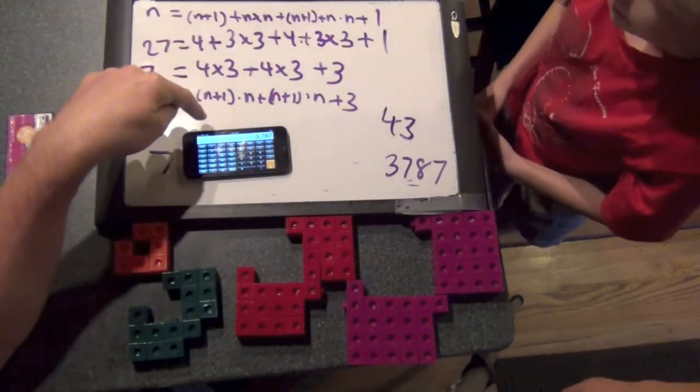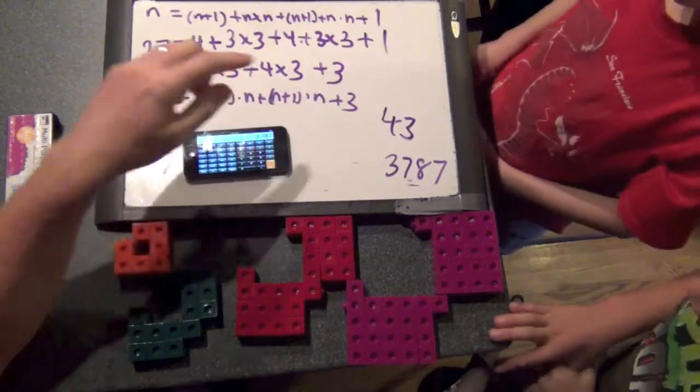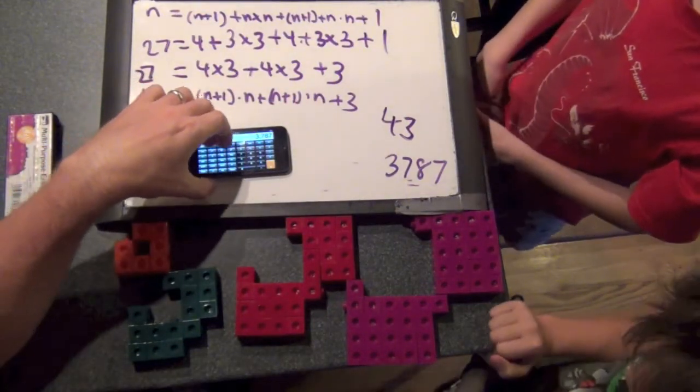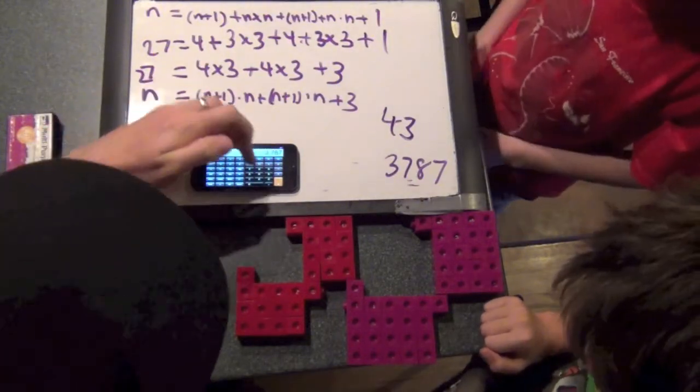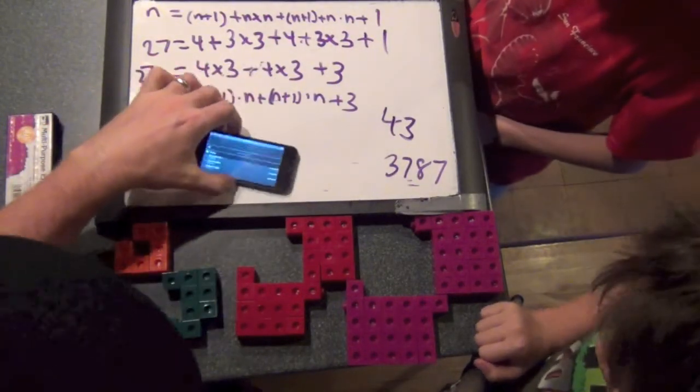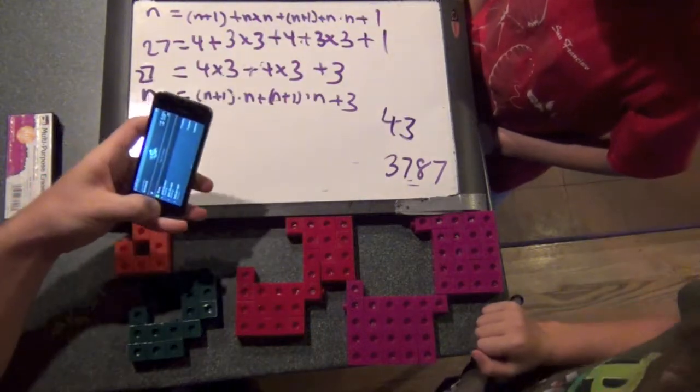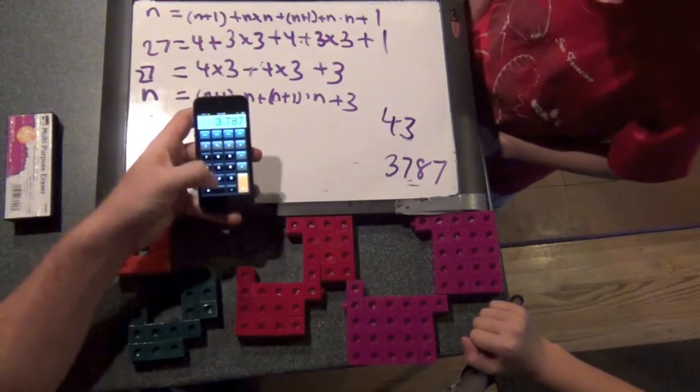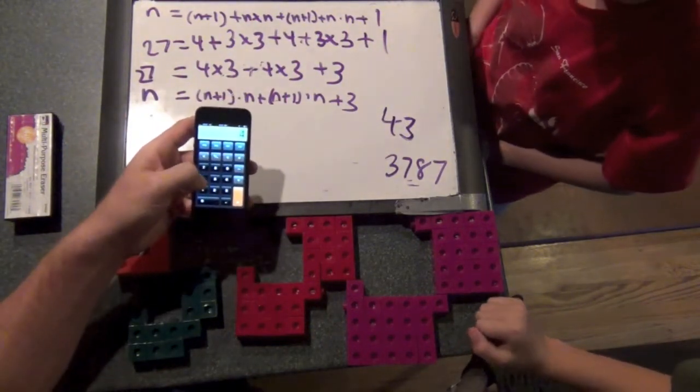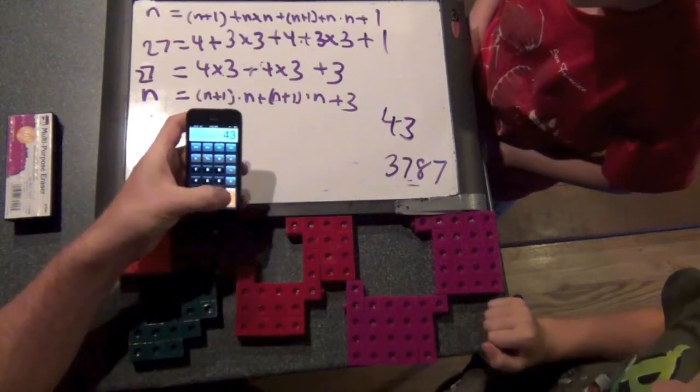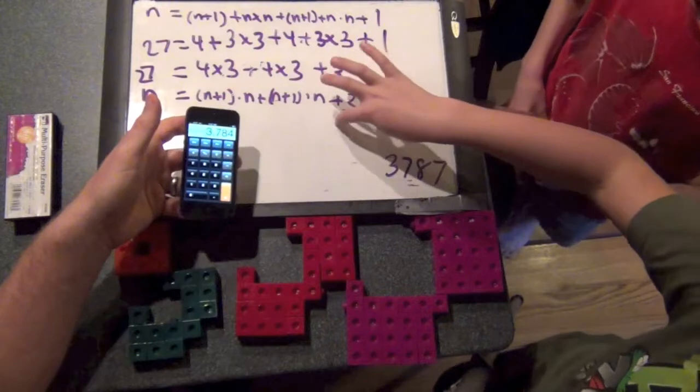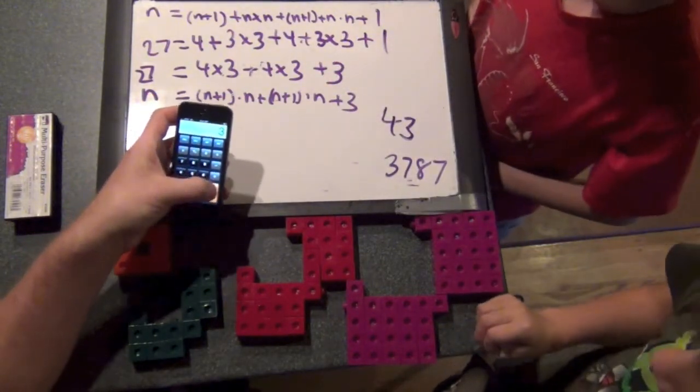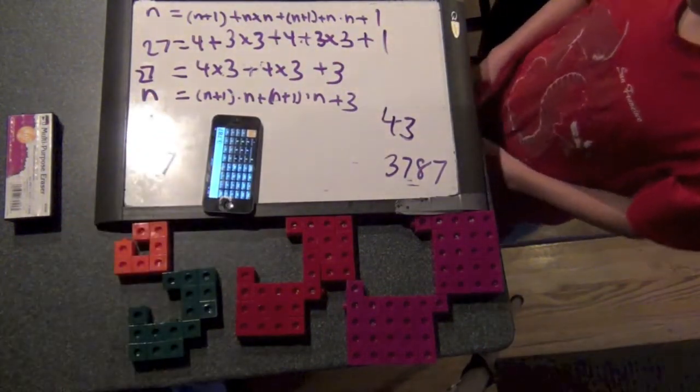Now your pattern was N plus 1 times N, N plus 1 times N plus 3, right? Yes. So you want to do 2 times 44 times 43? So 2 times 44 times 43 equals 3784. And then what do we have to do? We have to add this little 3. Plus 3 is? 3787? Yeah. Cool.